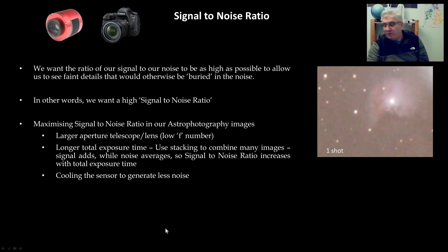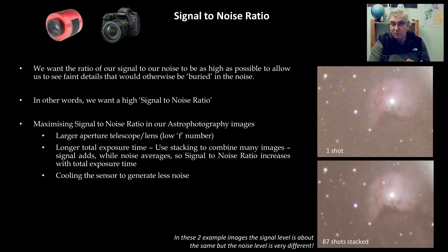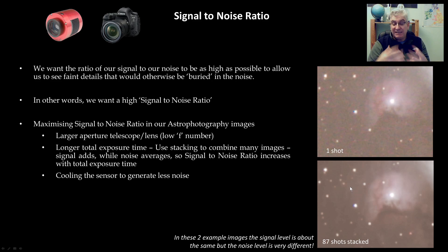Here's a visual representation of signal-to-noise ratio at work. This is a single 60-second shot of the Orion Nebula with a colour camera — you can see noise in the background. Then 86 more shots were taken and stacked with the first one, and the signal level is about the same in both images, but the noise level is dramatically reduced. There are faint features now visible which you couldn't see at all with a single shot.